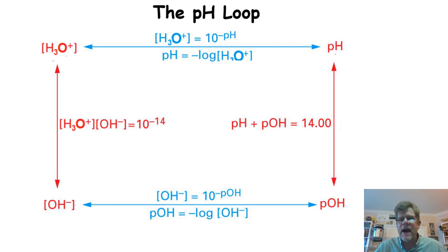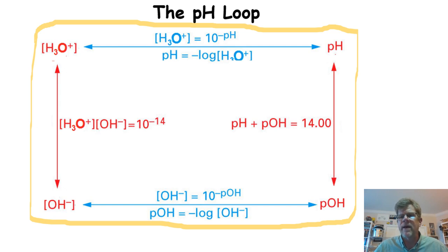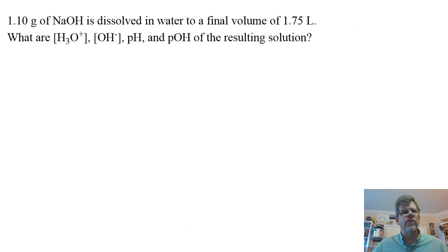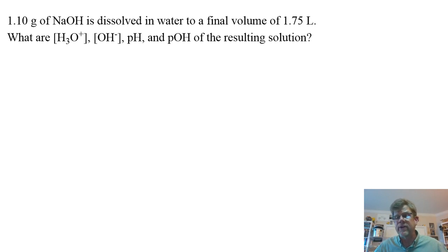It's that simple. Now we have all these different values and doorways between them, so we can mathematically — given one value — calculate all the rest. Let's look at an example: 1.10 grams of NaOH, a strong base, dissolved in water to a final volume of 1.75 liters. What are the hydronium ion concentration, hydroxide ion concentration, the pH, and the pOH of the resulting solution?